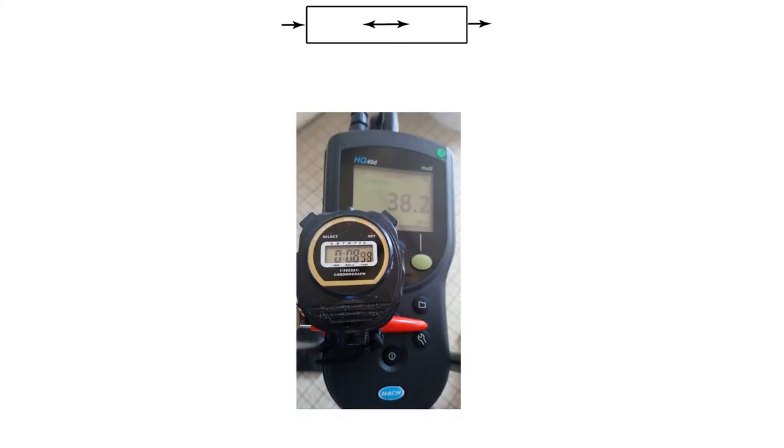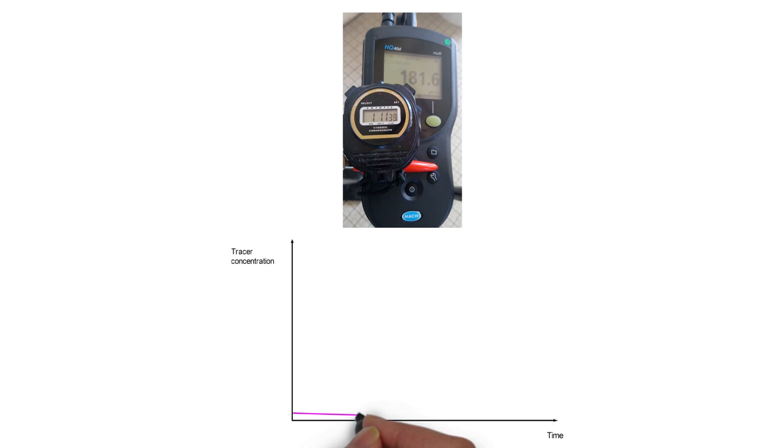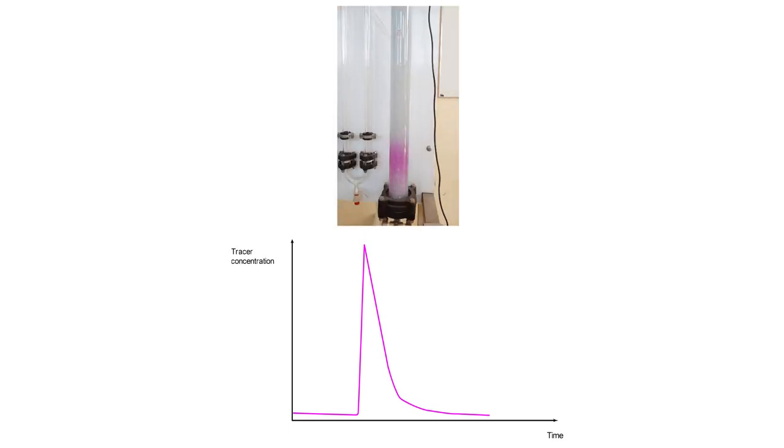It can be seen that the tracer concentration increases rapidly at first, but not instantaneously like in an ideal reactor. The concentration then decreases more or less slowly depending on how much axial dispersion there is in a reactor. This decrease in concentration is not at all instantaneous as it would be in an ideal plug flow reactor. However, it is faster than that observed in a perfectly mixed CSTR.